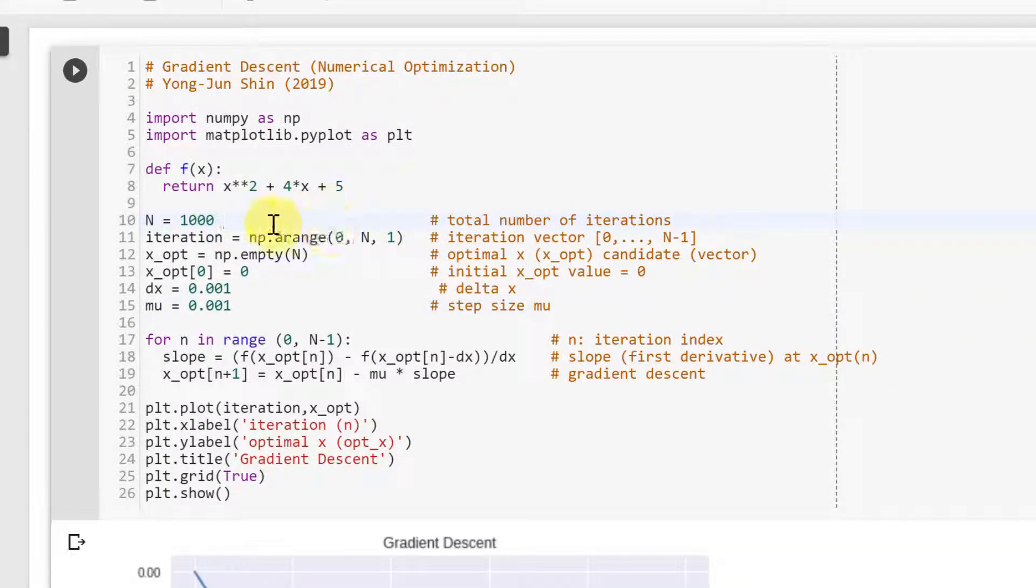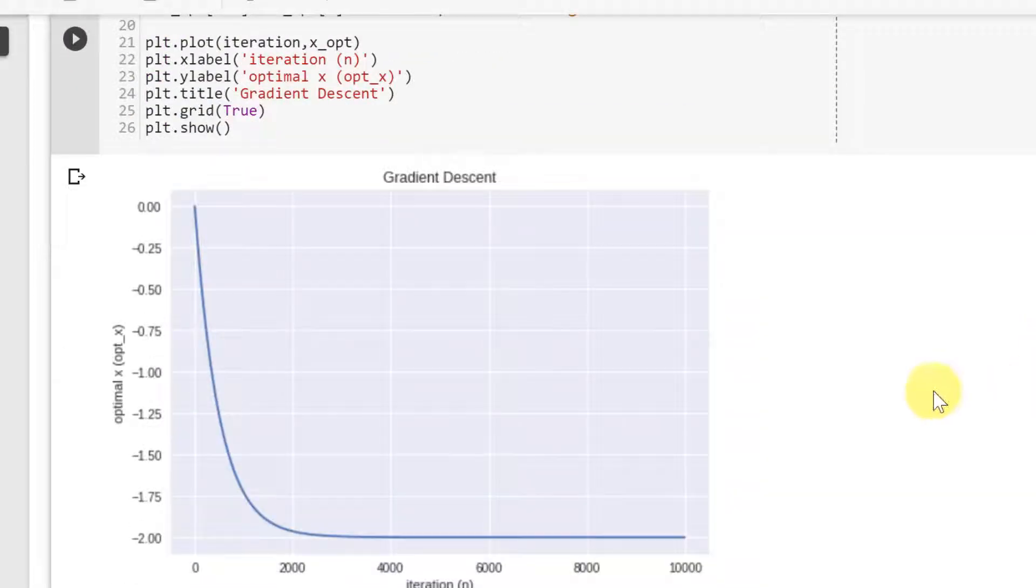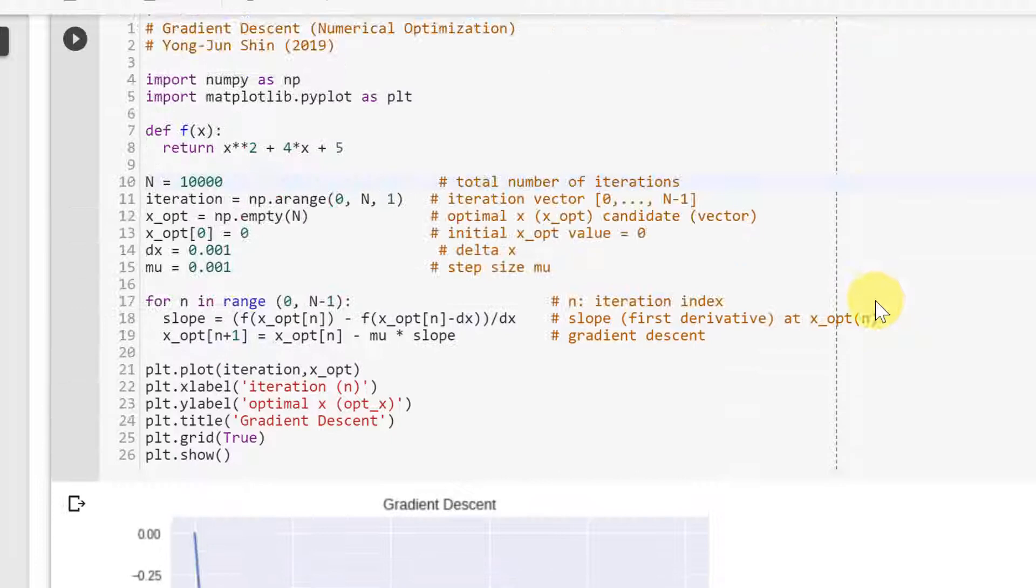So let me increase this number of iterations. Let's increase it to 10,000. Let me run the code again. And now we see that after like 3,000 or 4,000, we reach this negative 2.